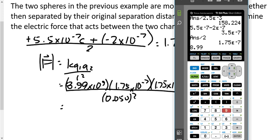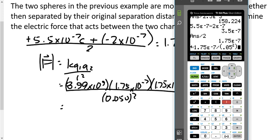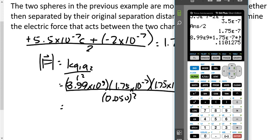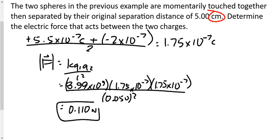Now it's a straightforward calculation: F = KQ₁Q₂/R² = (8.99 × 10⁹)(1.75 × 10⁻⁷)(1.75 × 10⁻⁷) / (0.05)² = 0.110 N. The question asks for the electric force, not just the magnitude, so we should include direction. After touching, both charges are positive, so it's a repulsive force of 0.110 N — they're like charges now.